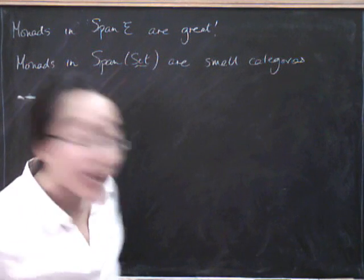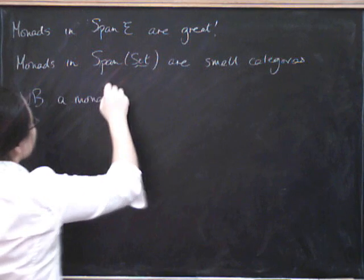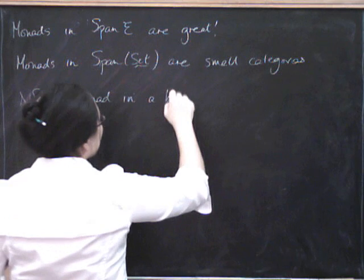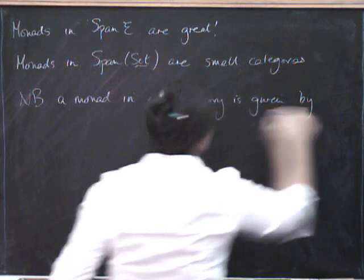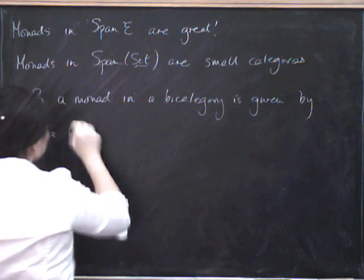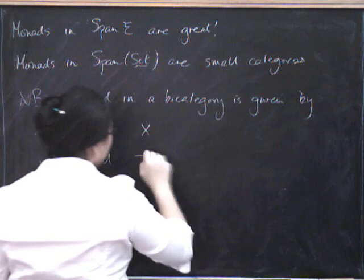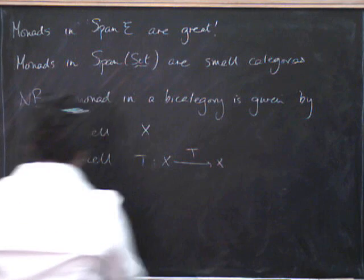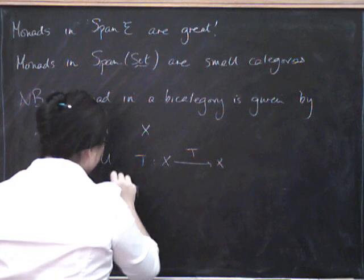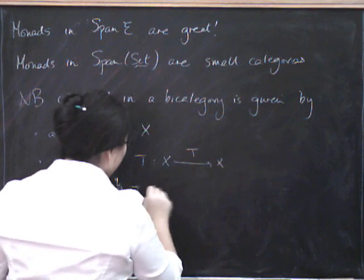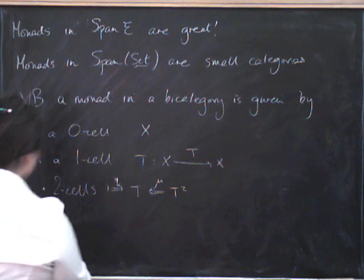So NB, a monad in a bi-category is given by a zero cell x, a one cell that goes from x to itself, and a pair of two cells. Just as before, you've got an eta which goes from one to t, and you've got a mu that goes from t-squared to t, satisfying the usual monad axioms.